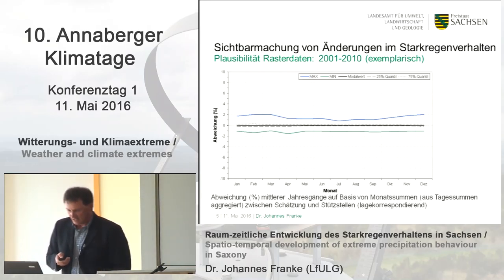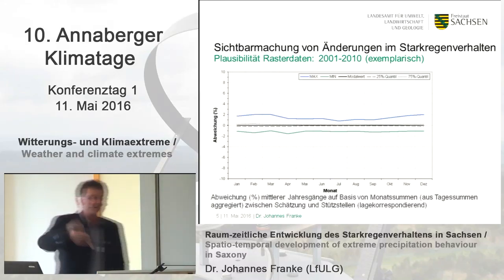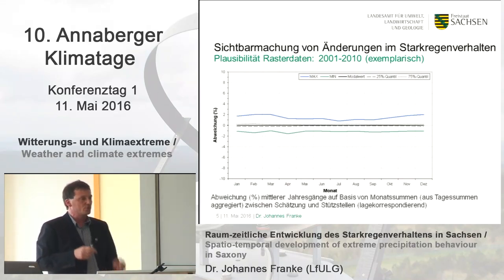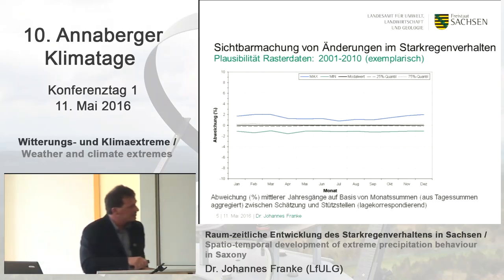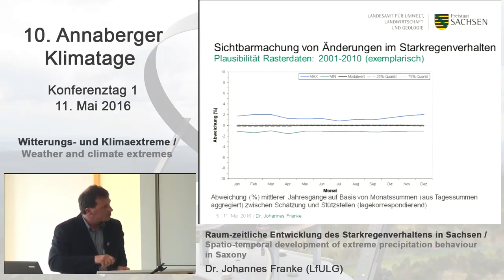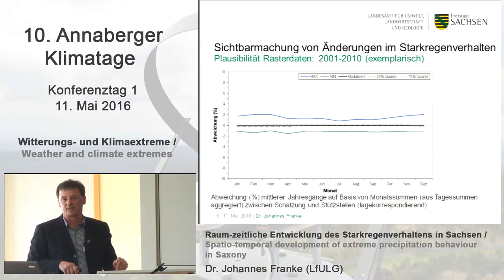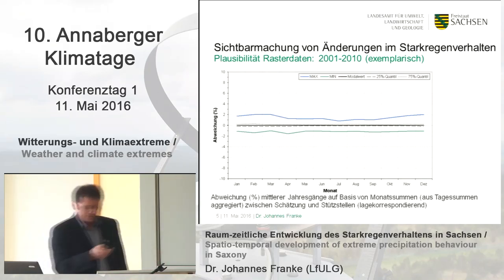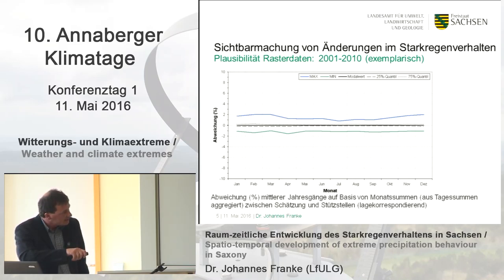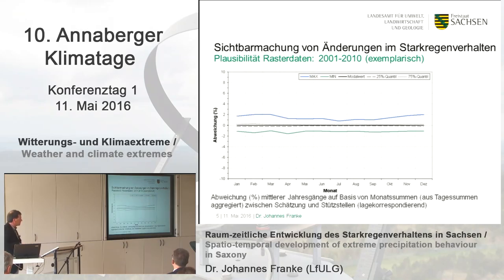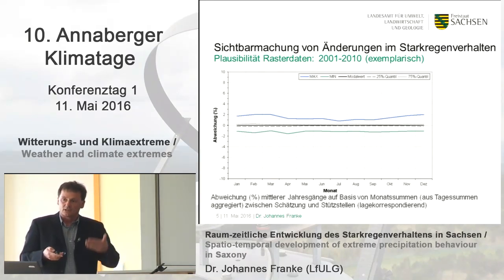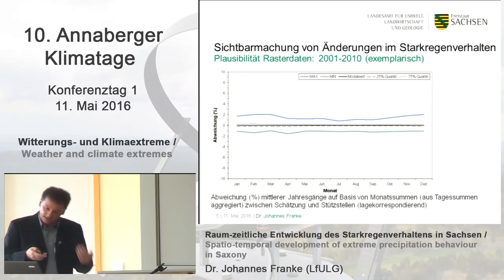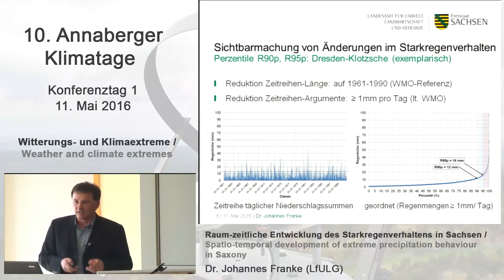In this chart, you can see the deviation in percentage of the monthly sums, which were aggregated by the daily sums between estimation and grid points — grid cells were used where the grid points are in there. We start with the absolute maximum and the absolute minimum. There's a deviation of plus or minus 2%. The model value is exactly on the zero line, and a little bit higher are the 25th and 75th percentiles. So it's a good quality for precipitation interpolation. You have to know the database very well when you want to use it for analysis.